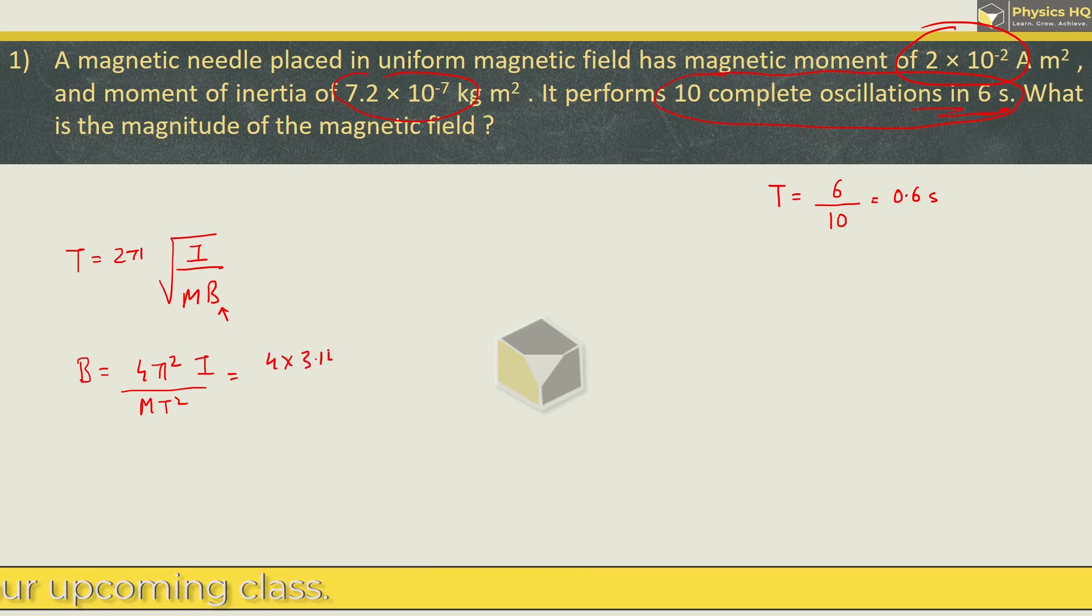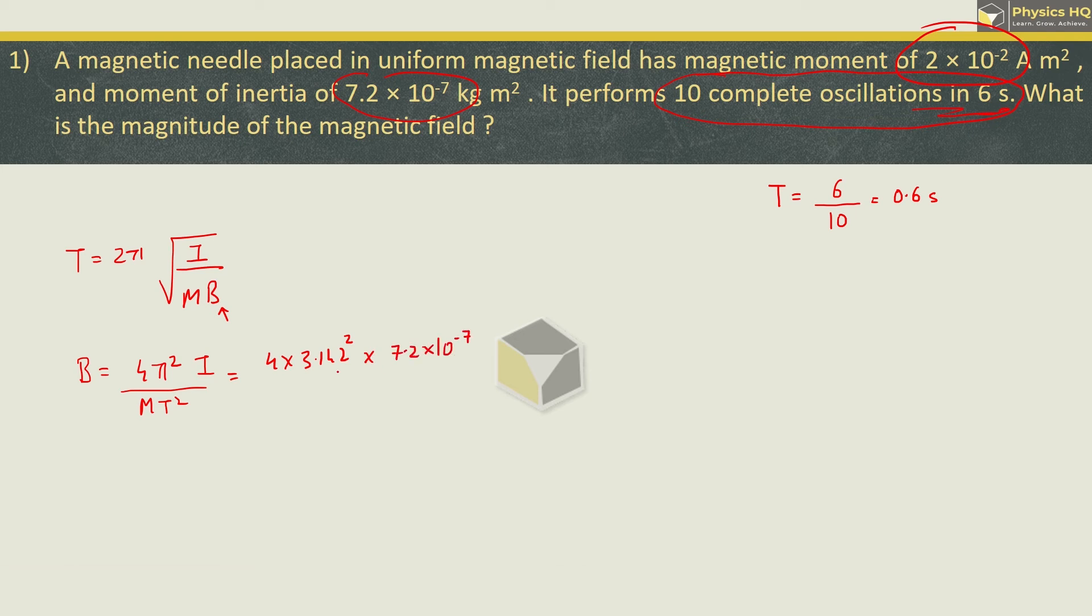Let us put all the values. So, 4 x 3.142 square x 7.2 x 10 raise to minus 7 divided by magnetic moment 2 x 10 raise to minus 2 into t is 0.6. When you solve this by log, you will get 39.48 x 10 raise to minus 4 weber per meter square or tesla.